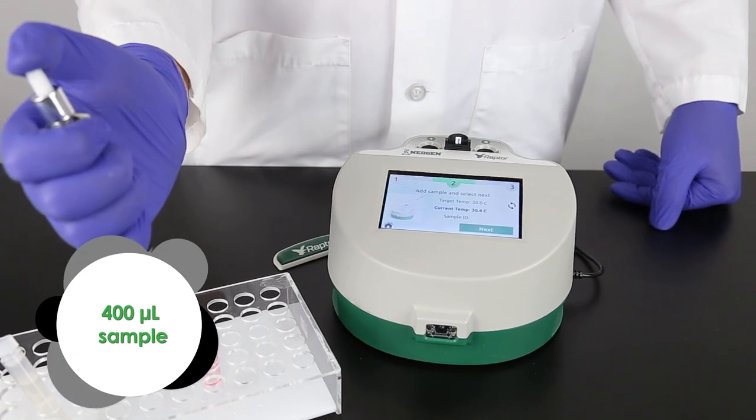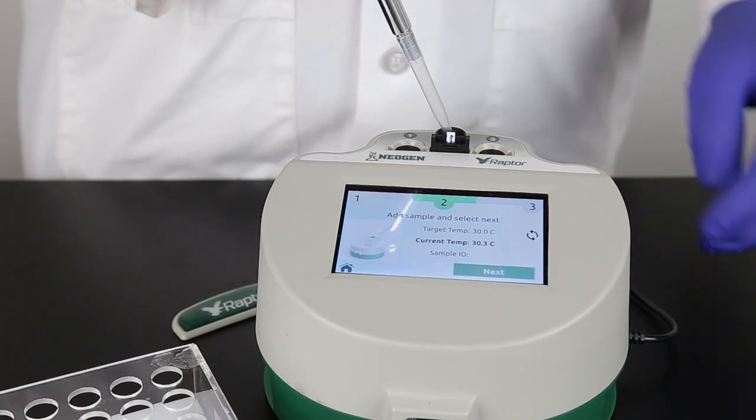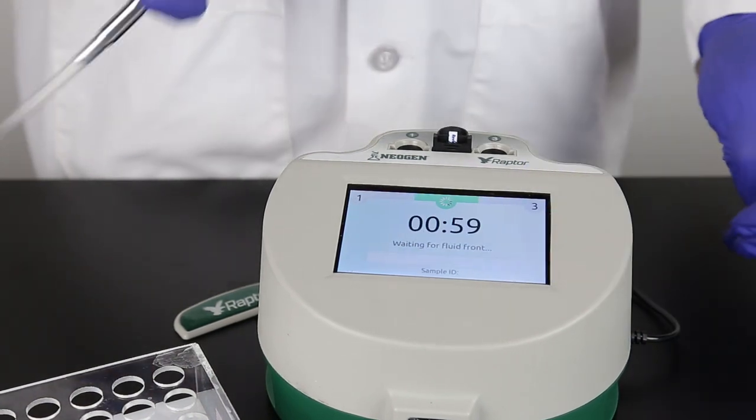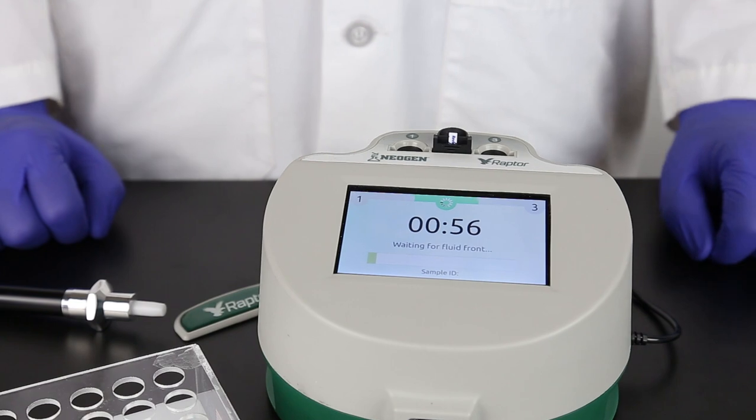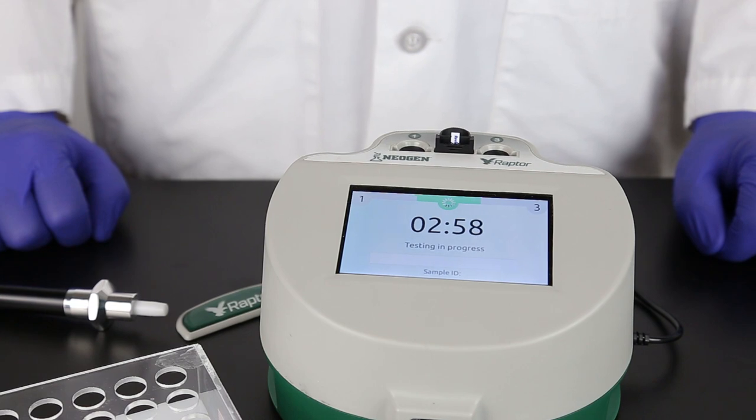Pipette 400 microliters of sample into the Raptor cartridge. The system and timer will start as soon as it detects the fluid front on the sample strip. You can now start samples in the other two ports on the Raptor. Each port operates independently.